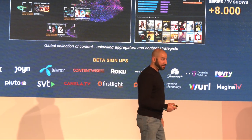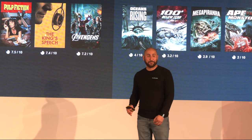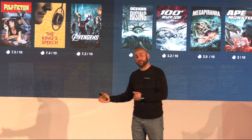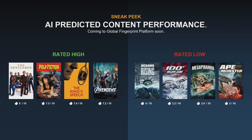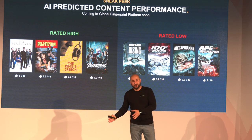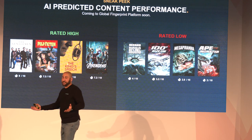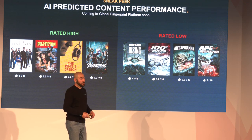Before I end, one sneak peek at something incredible: AI can now predict what we call a content quality score — it can look at a movie and tell you its entertainment value. On the low-rated side, there's a very clear pattern: B movies like Mega Piranha or Mega Shark versus Octopus all get very low ratings. But then you have quality content. This can be utilized for contextual advertising — you wouldn't want your brand like BMW or Gucci associated with a very low-quality movie.